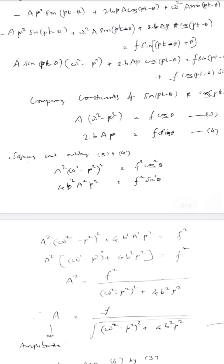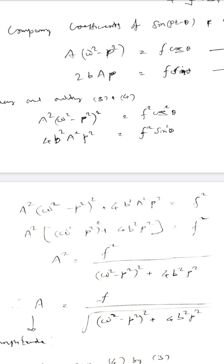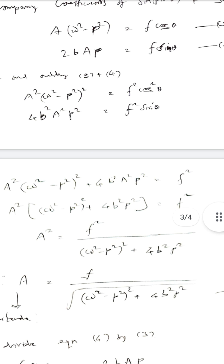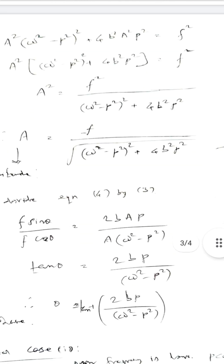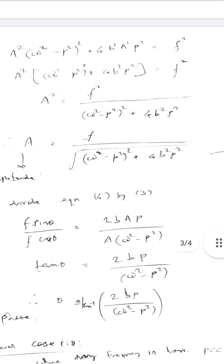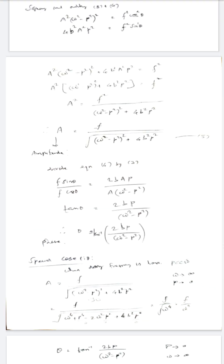From A²[(ω² − p²)² + 4b²p²] = f², we get A² = f² / [(ω² − p²)² + 4b²p²]. Taking the square root, the amplitude A = f / √[(ω² − p²)² + 4b²p²]. This A is the amplitude of the forced oscillation.